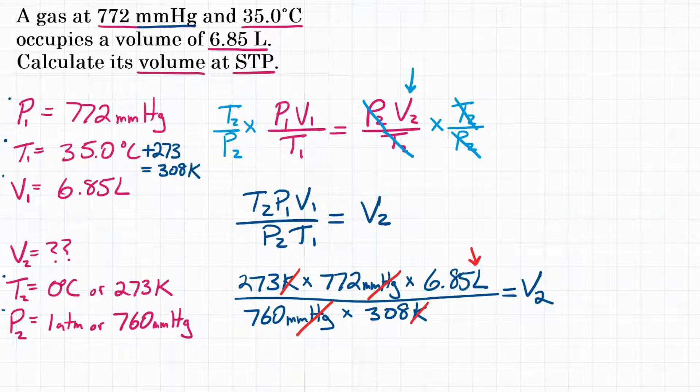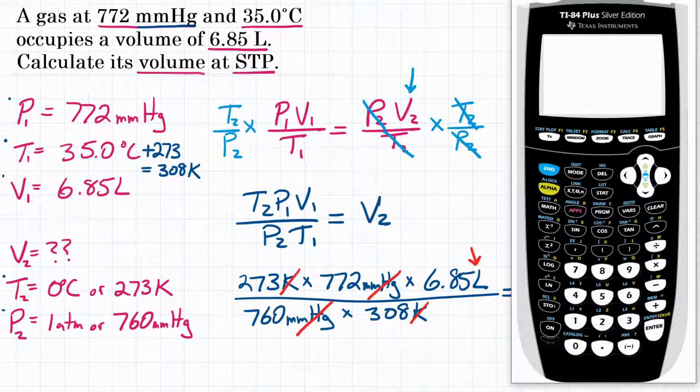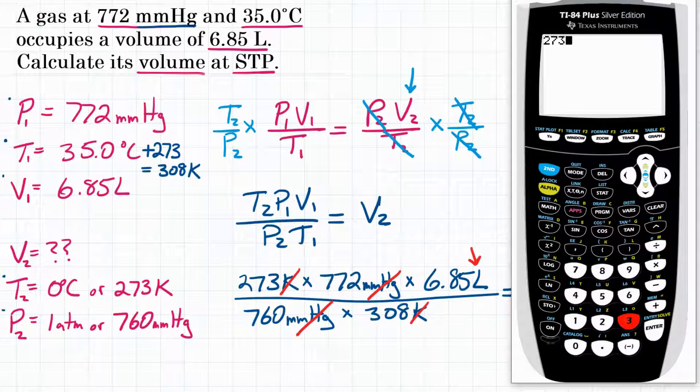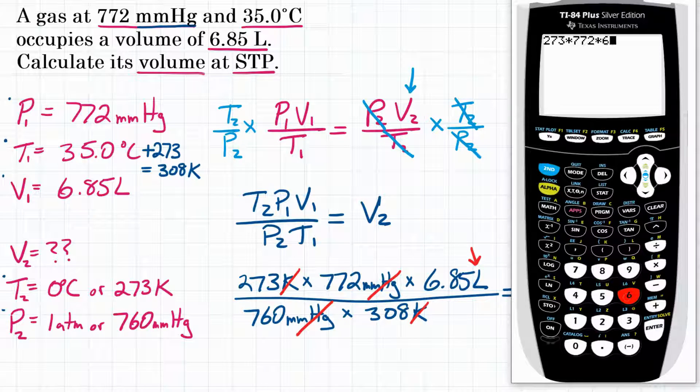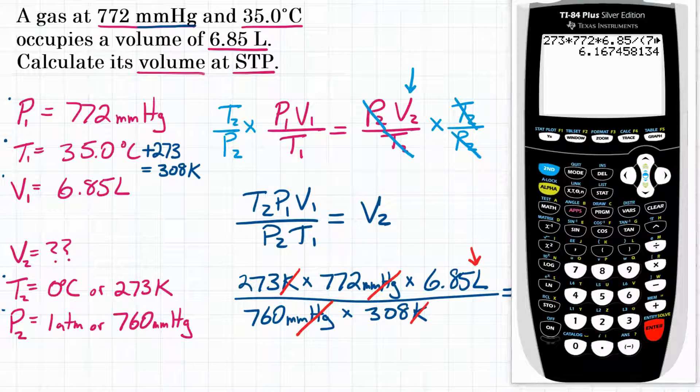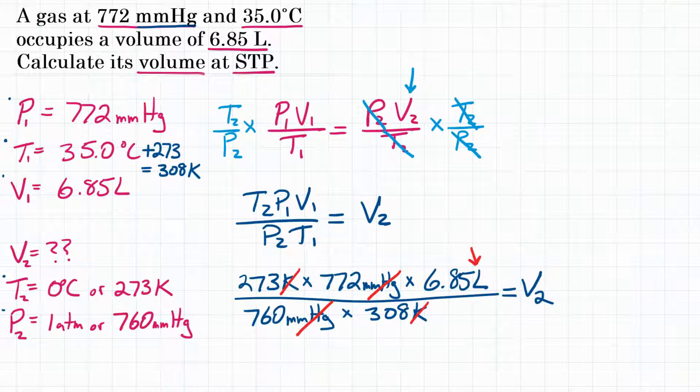Now we can plug this into our calculator. Start with 273, multiply by 772, multiply by 6.85, then divide. Open parentheses for proper order of operations: 760 times 308, close parentheses, equals. The calculator gives 6.1674. Rounding to three significant figures, we get a final answer of 6.17 liters.